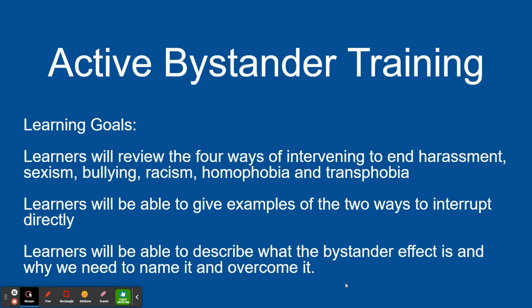Our learning goals today are to review the four ways of intervening to end harassment, sexism, bullying, racism, homophobia, and transphobia, or any other harassment that you might be confronted with. You'll be able to give examples of the two ways to interrupt directly when you do see harassment happening, and you'll be able to describe what the bystander effect is and why we need to name it and overcome it.